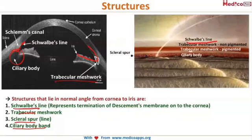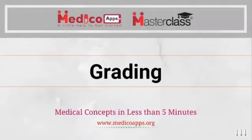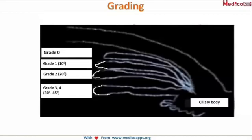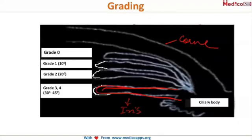Depending on which structures you can visualize, you grade the angle and decide whether the patient is predisposed to angle closure or not. When the iris is far behind and all of the angle is open, this is grade 3 or 4. The angle measures about 30 to 45 degrees, and such patients are not predisposed to glaucoma.